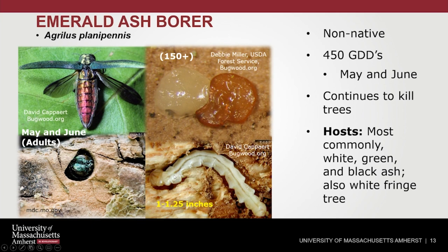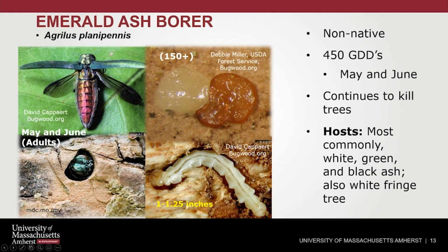The larval stage is the most destructive stage of this insect. These larvae bore beneath the bark and feed in the vascular system of the host plants, effectively girdling the trees. For EAB larval identification, note the bell-shaped abdominal segments — helpful when comparing to some other native buprestids also found in ash trees. Other signs of an EAB infestation include D-shaped exit holes created when adults emerge. Host plants include most commonly white, green, and black ash, but there have also been records of EAB infesting white fringe tree; however, Fraxinus is the genus most significantly impacted.